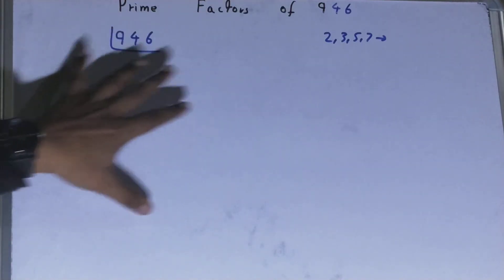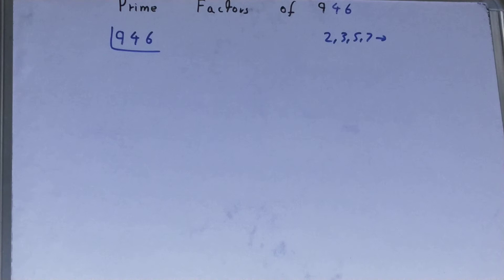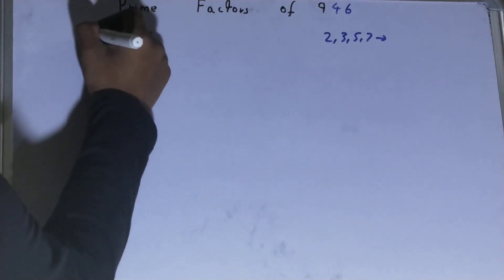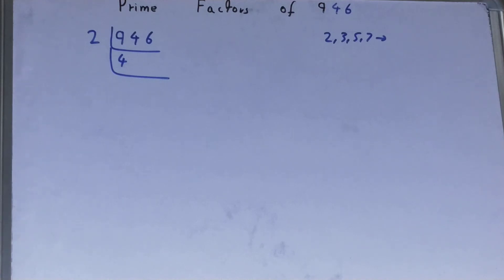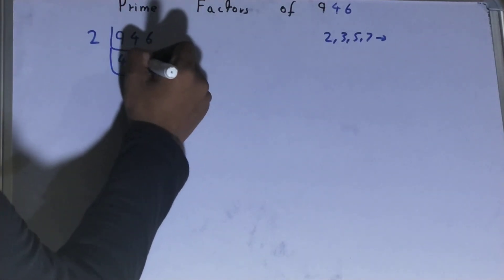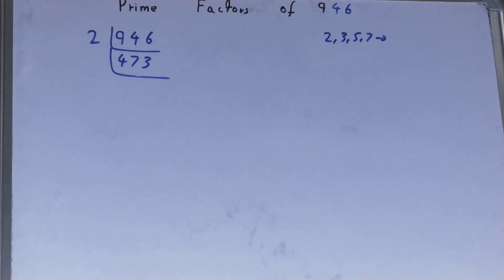Is the number 946 divided by 2? Yes it is, because 946 is an even number. So divide it and you will be left with 473. Now is this 473 divisible by 2? The answer is no, it is an odd number.